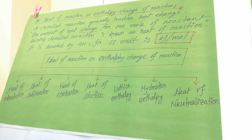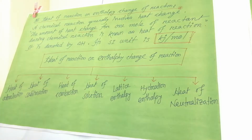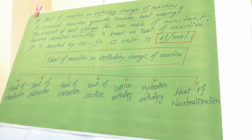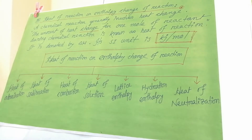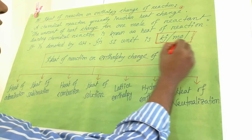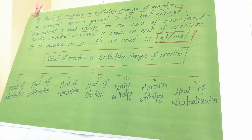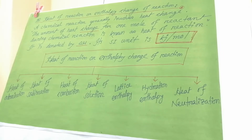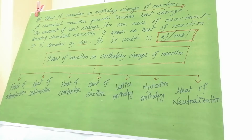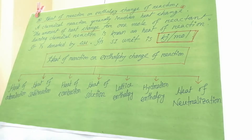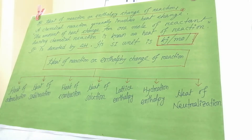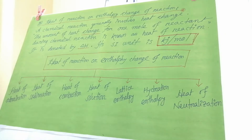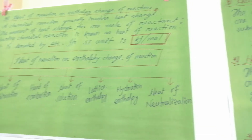The amount of heat change for one mole of reactant during a chemical reaction is known as heat of reaction. The types of heat of reaction include: heat of atomization, heat of solution, lattice enthalpy, hydration enthalpy, and heat of neutralization.